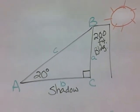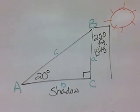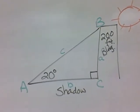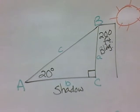We have a sun that's at a 20 degree angle of elevation above the horizon. It's behind a 200 foot tall building, and we want to figure out what the length of the shadow is that's cast by this building.